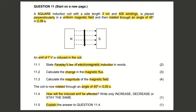Looking at the image accompanying the question, we see two bar magnets — a north pole (N) and a south pole (S). The magnetic field lines run from north to south, represented by dashed lines with an arrow pointing at the south pole. The induction coil is represented by the thick black line between the bar magnets. The induced EMF in the induction coil has a value of 7 volts.